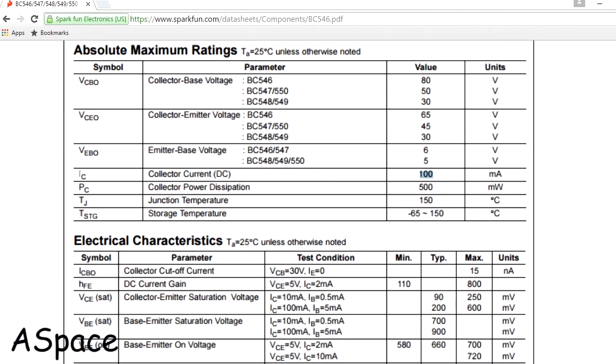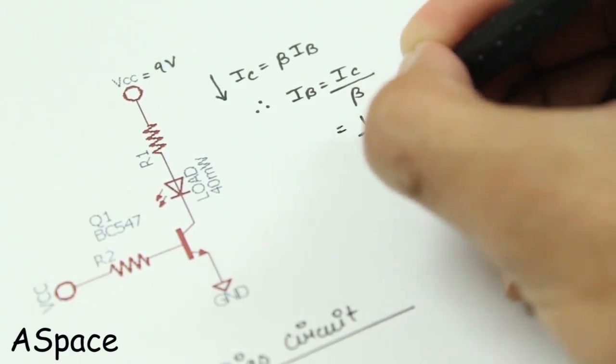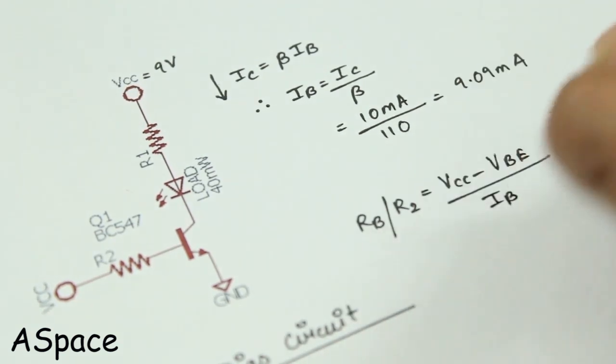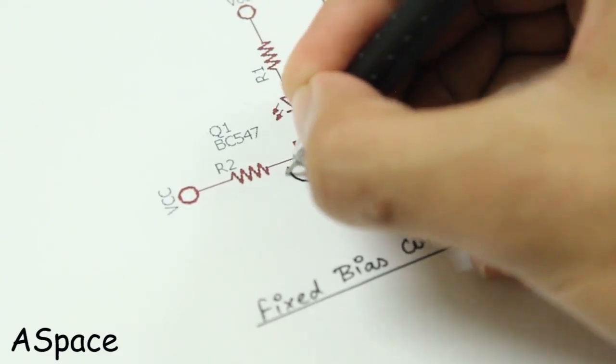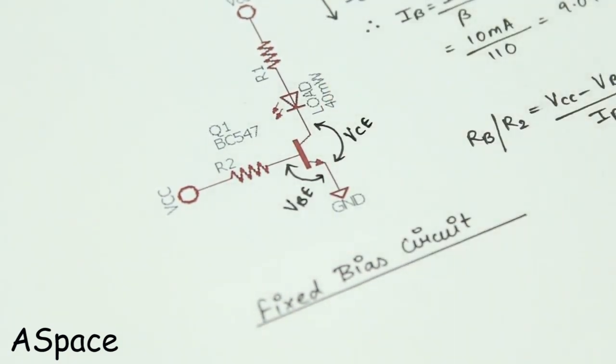To calculate beta, we need to go through the datasheet, where it will be written as current gain, which is found out to be 110. Now let's calculate IB. R2 can be easily calculated by Kirchhoff's voltage law in the lower mesh. We need to consider the voltage drop across the base emitter junction and collector emitter junction for the calculation. This type of configuration is called common emitter configuration.